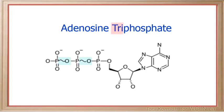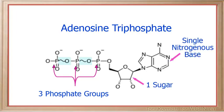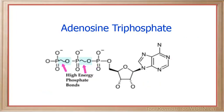The prefix tri means three, so the name tells us that there are three phosphate groups in this molecule. The three phosphate groups are attached to one sugar and a single nitrogenous base. Notice the squiggly lines between the phosphate groups.